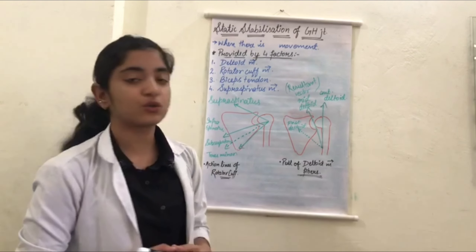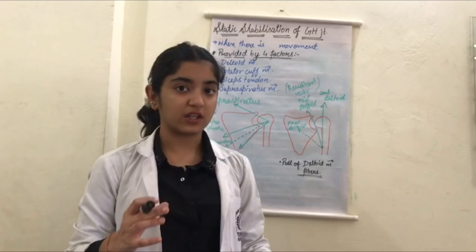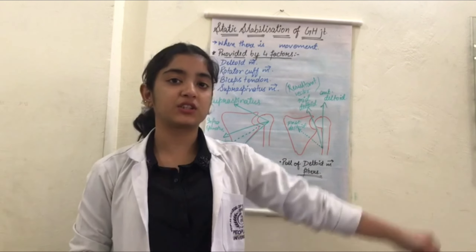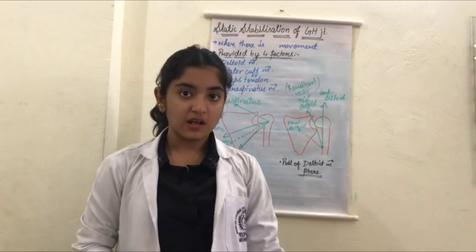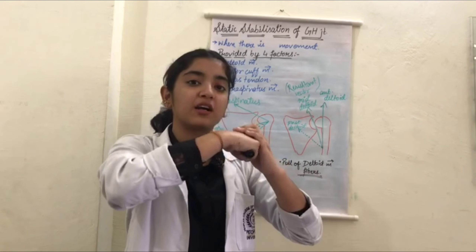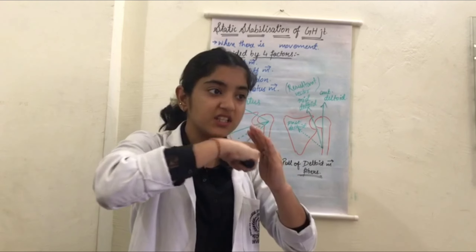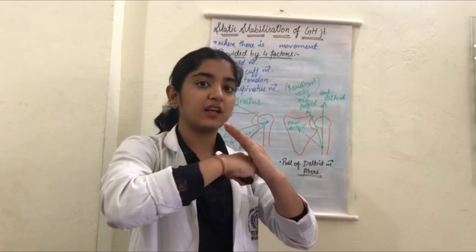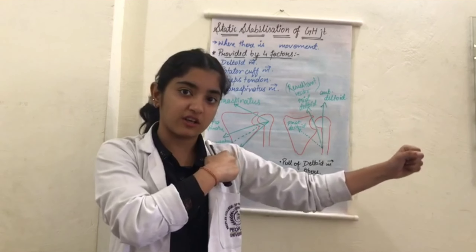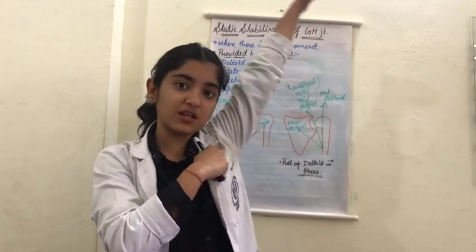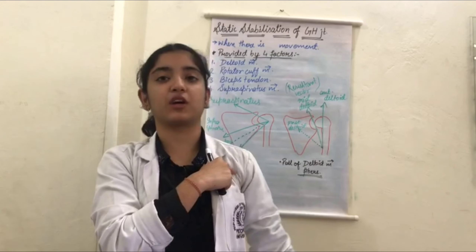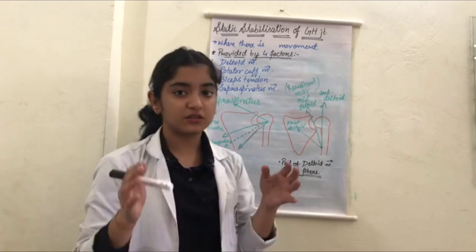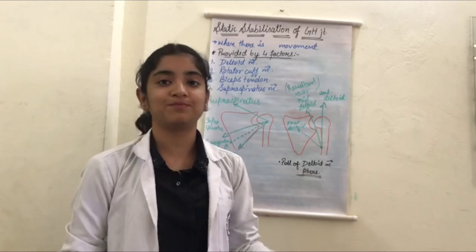Similarly, all three fiber groups of deltoid are needed for complete abduction. Because the humeral head comes close to the acromion during abduction, lateral rotation is required to clear the acromial bursa and subacromial space — this lateral rotation is provided by the rotator cuff muscles, enabling full abduction to be achieved. That concludes our discussion of static and dynamic stabilization of the glenohumeral joint. Thank you.